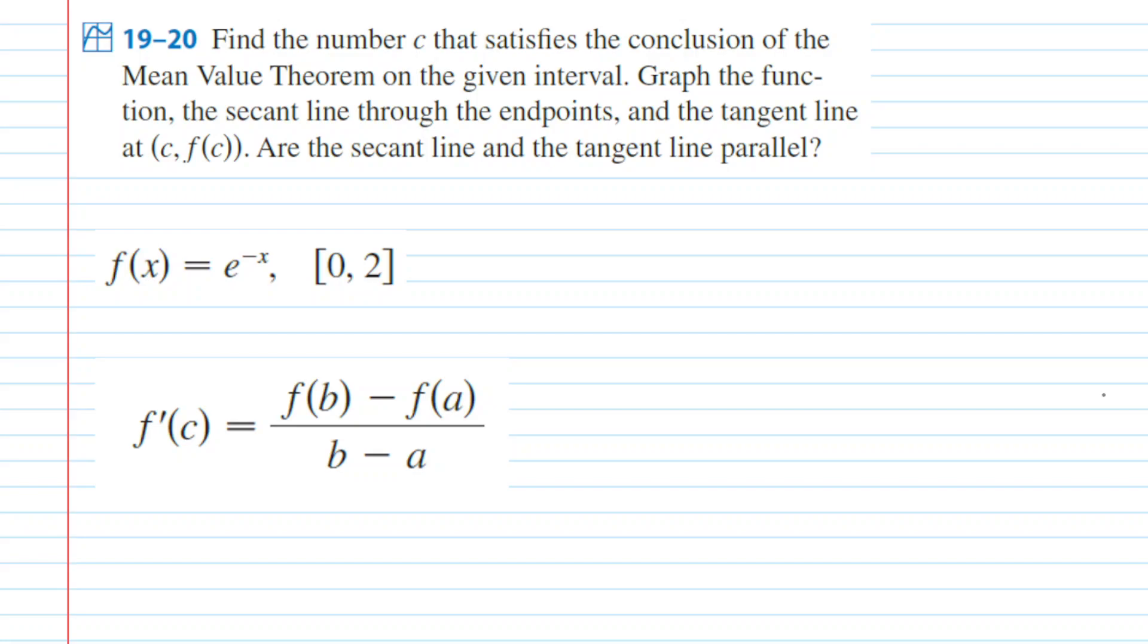There are two hypotheses associated with the mean value theorem, and once those two hypotheses are satisfied, then there is a particular conclusion that is also satisfied, and that conclusion is written down here.